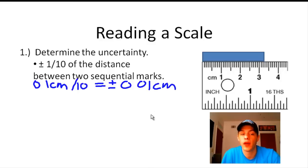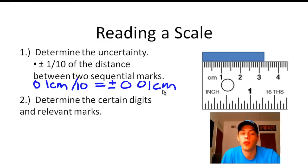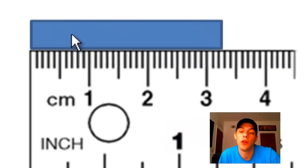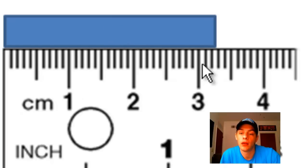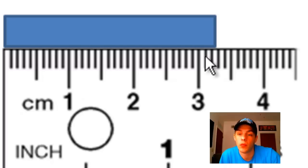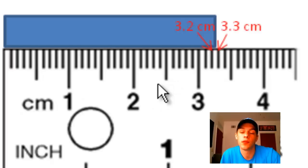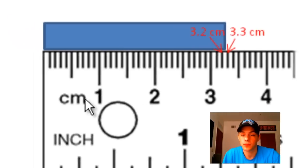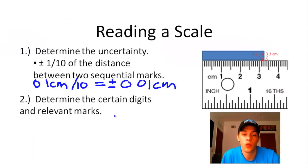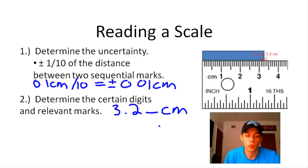The next step, once we have the uncertainty, is to determine the certain digits and the relevant marks. We certainly know that the 3 is a certain digit — this is going to be three point something. It looks like this mark is between 3.2 centimeters and 3.3 centimeters, so those are our relevant marks — the marks that lie below and above our spot of interest. We know that this is going to be 3.2 something centimeters.